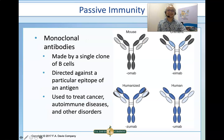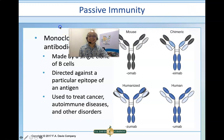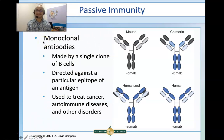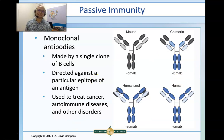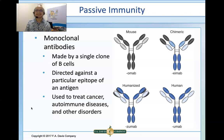Monoclonal antibodies are antibodies produced by a single clone of cells, directed against a particular epitope of an antigen. They are used to treat cancer, autoimmune diseases, and other disorders. The origin of monoclonal antibodies can be identified by their suffix: '-omab' means it came from mouse; '-ximab' means chimeric; '-zumab' means humanized; and '-umab' means it is fully human. For more information, refer to page 469 of your textbook.